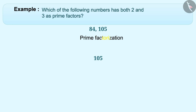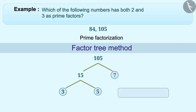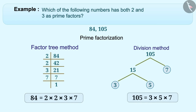Now let's find the prime factorization of 105 using the factor tree method. A factor pair of 105 is 15 and 7. The factor pair of 15 is 3 and 5. Since 3, 5, and 7 are all prime numbers, the factor tree of 105 is complete. Therefore, 105 = 3 × 5 × 7. As you can see, both 2 and 3 are prime factors of 84 only, so the answer is 84.